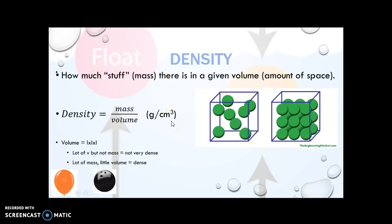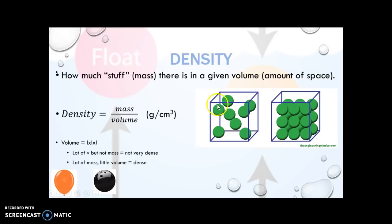There is lots of variety with this. You can have a lot of volume but not a lot of mass — like our balloon here; there's volume but not mass, so it's not very dense. Or you can have something like our bowling ball, which has a lot of mass and little volume, so it's considered dense. It's based on how closely the molecules are packed together. Here is a cartoon drawing of something less dense on the left and something more dense on the right.